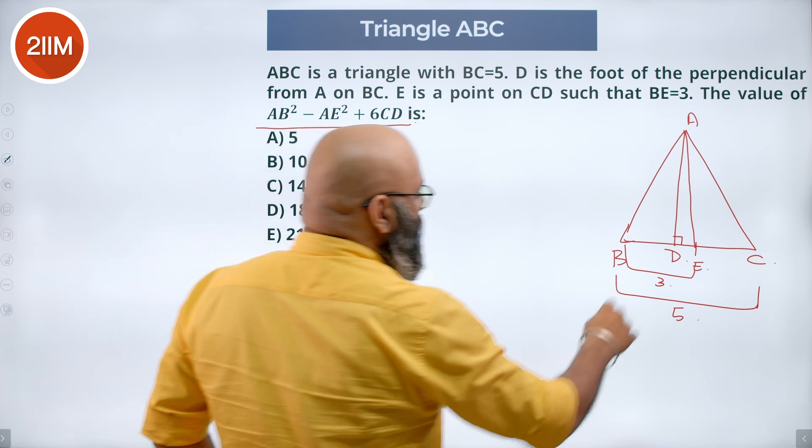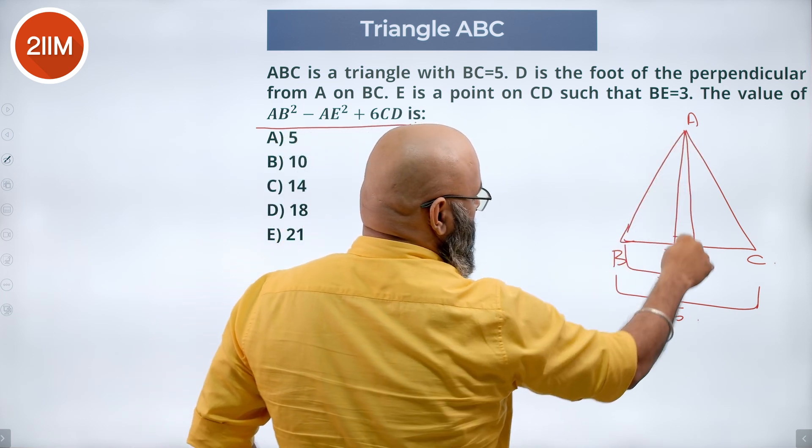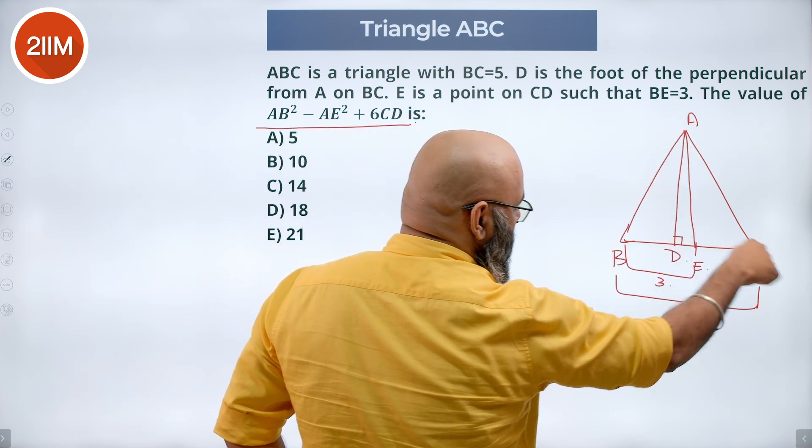Now if you notice we have two right angle triangles, in fact three right angle triangles. We have triangle ABD, we have ADE, and ADC.